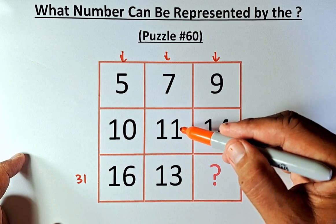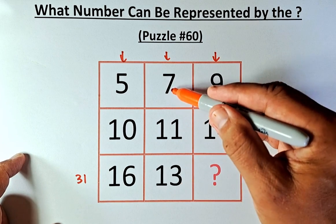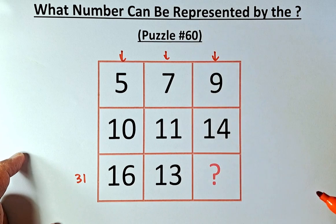So is 7 plus 11 plus 13. 7 plus 13 is 20, 20 plus 11 is 31.